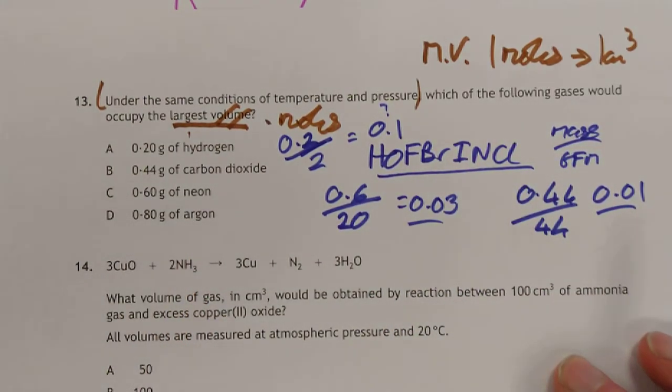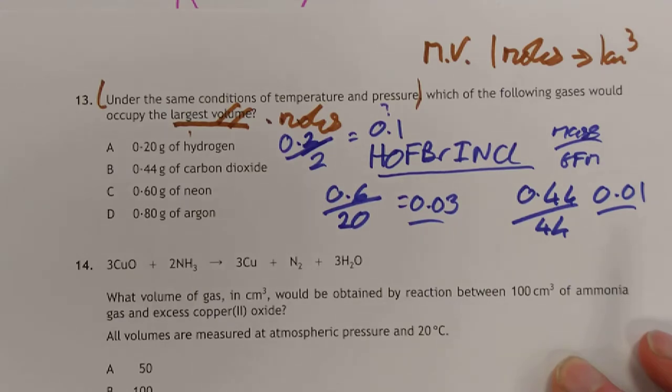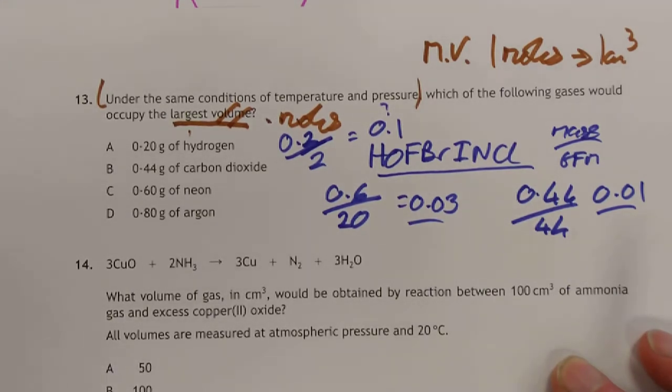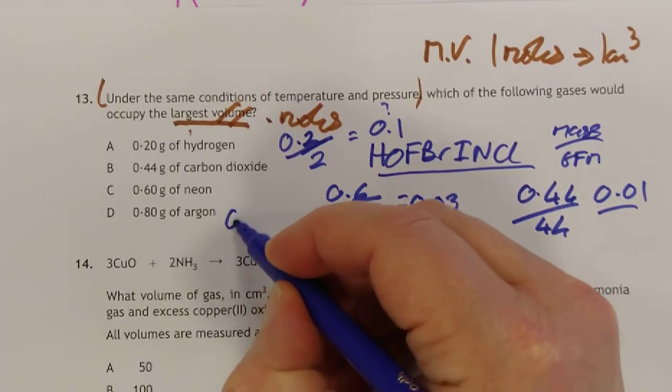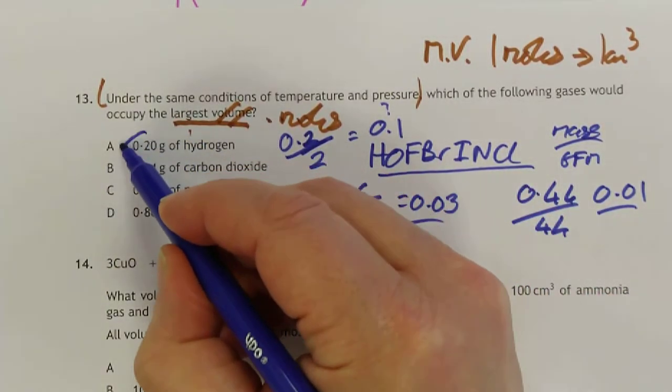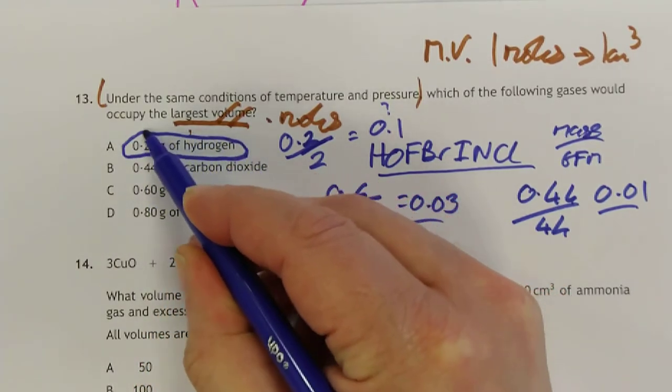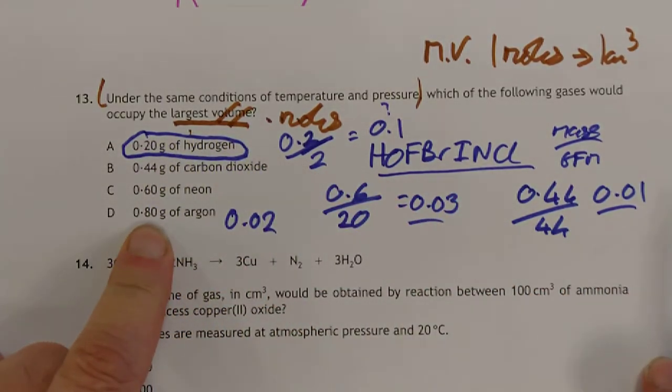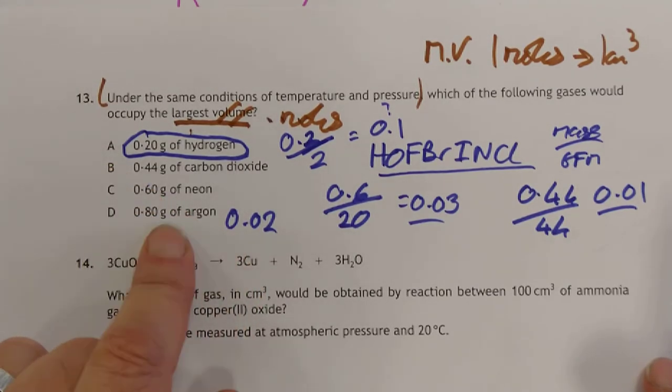This is looking like our leader at the moment, but let's just check for sure. 0.8 grams of argon. Argon is 40. So 0.8 over 40. 0.02 for that one. There you go. That one there is in fact the largest volume, despite not being the largest weight, of course, because it's moles that count in chemistry, not mass.